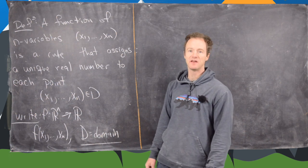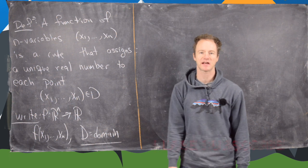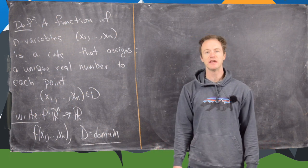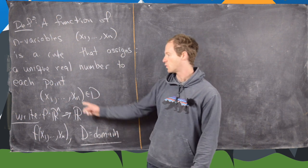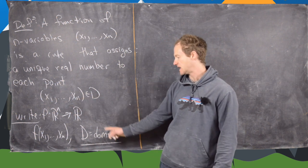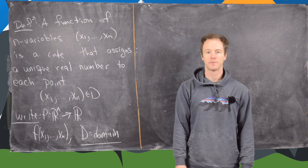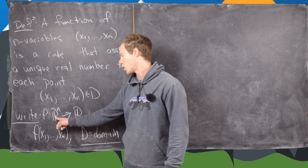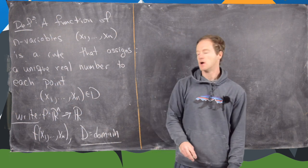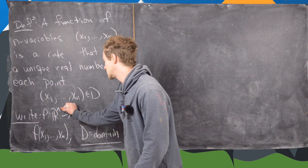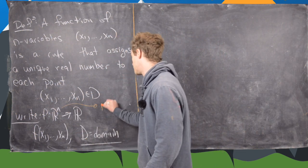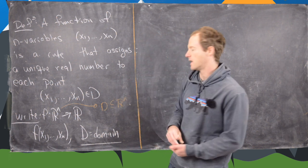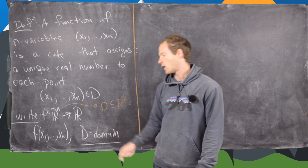We'll say that f is a function of n variables, called x1 up to xn, if it's a rule that assigns a unique real number to each one of these points in d, where d is the domain. Often we'll use this notation: f with a colon rn, or sometimes we'll replace this with just d where d is a subset of rn, meaning the domain up to r.